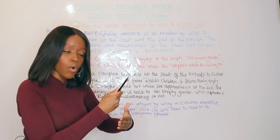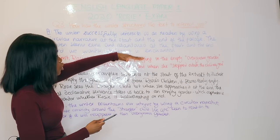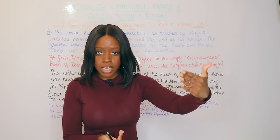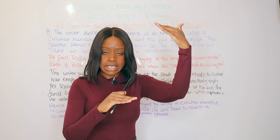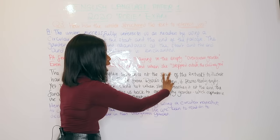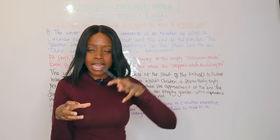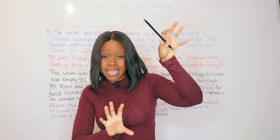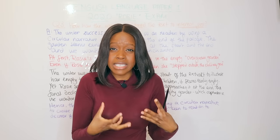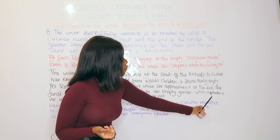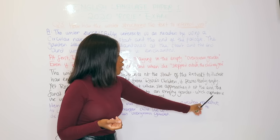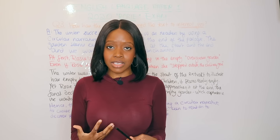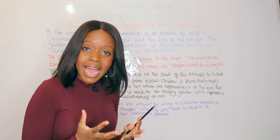The bulk of your marks are in the explanation. You need foregrounding with your point and evidence — setting out your argument as to why it's interesting — but then you make a case and really dissect it: at the beginning it's empty, there's a child in the middle, but by the end the garden is still eerily empty. Crucially, I keep referring back to us as readers — 'it captivates us' — never losing sight of how this interests us as readers.